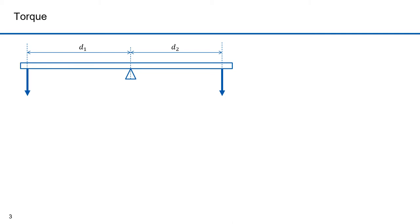Consider a seesaw. The tendency to rotate counterclockwise increases with the weight of the person on the left and with the distance from the pivot point. We call the tendency of a force to produce rotation torque. We define its magnitude as the product of the magnitude of the force and the perpendicular distance between its line of application and the axis of rotation. Note that I'm applying the force at right angles to the seat — this is what produces torque. Torque is commonly referred to with the Greek letter tau and it's about an axis passing through point P.